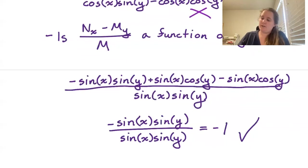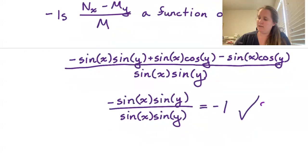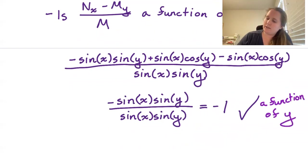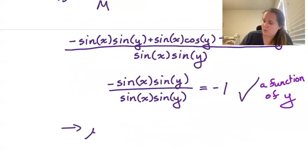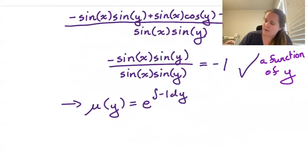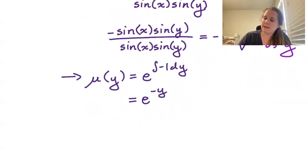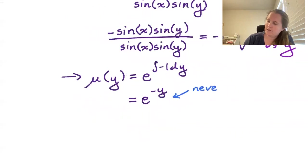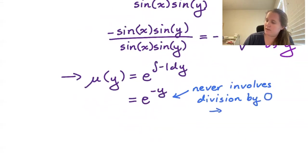This works — it is a function of y. So we take our integrating factor to be mu(y) = e to the integral of -1 dy, giving us mu = e^(-y). This integrating factor does not involve dividing by 0, so we should have no lost solutions.